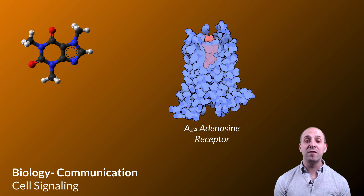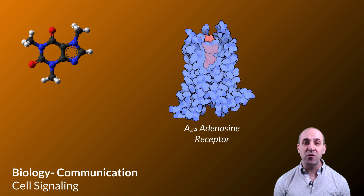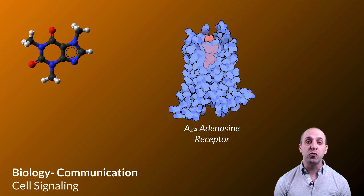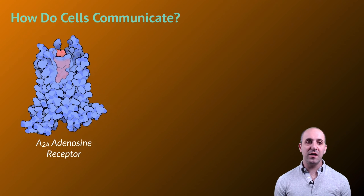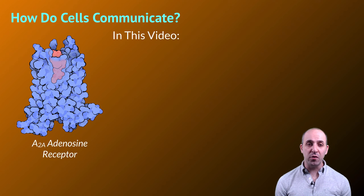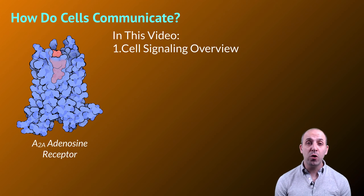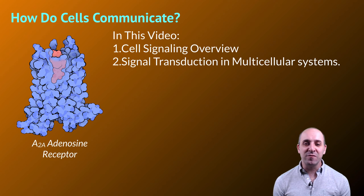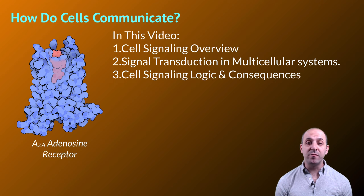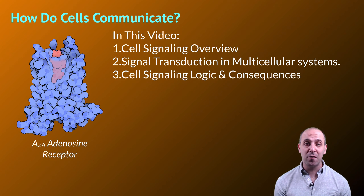This is cellular signaling in the main. It is the production of chemical messages that are then received by cells and used by those cells to carry out responses. Another name for this is signal transduction. The question we're going to answer in this video is how do cells communicate? We'll look at an overview of cell signaling at the broad level, and then focus in on signal transduction in multicellular systems, before discussing some cell signaling logic and consequences.